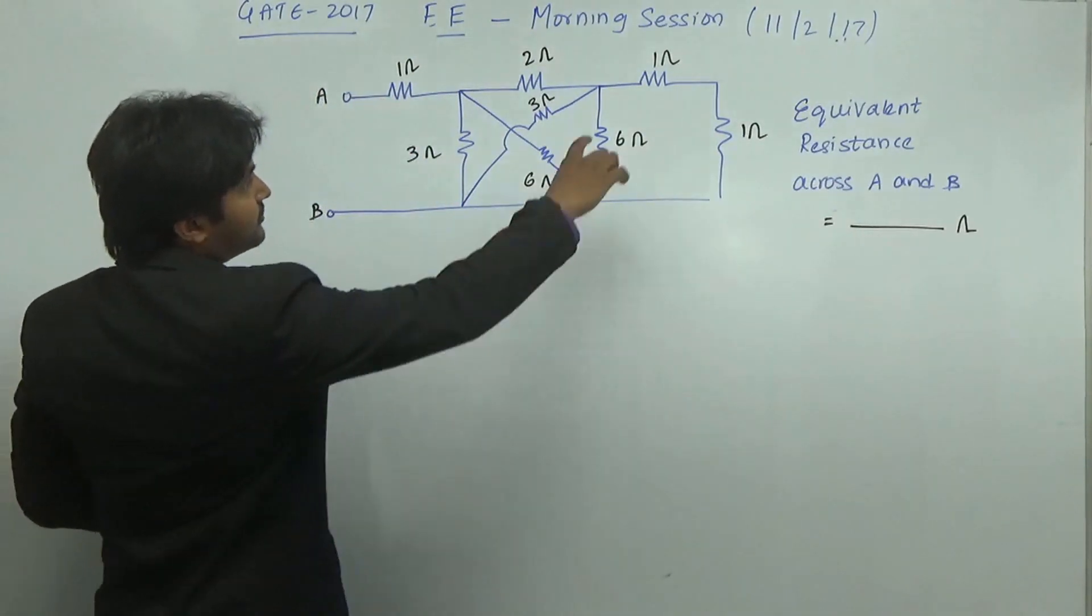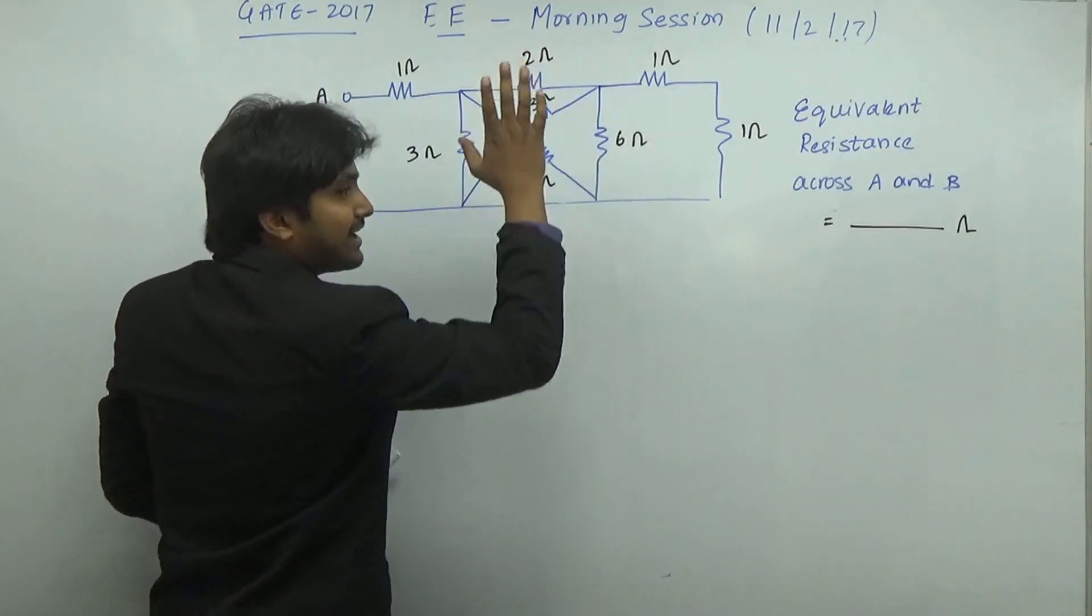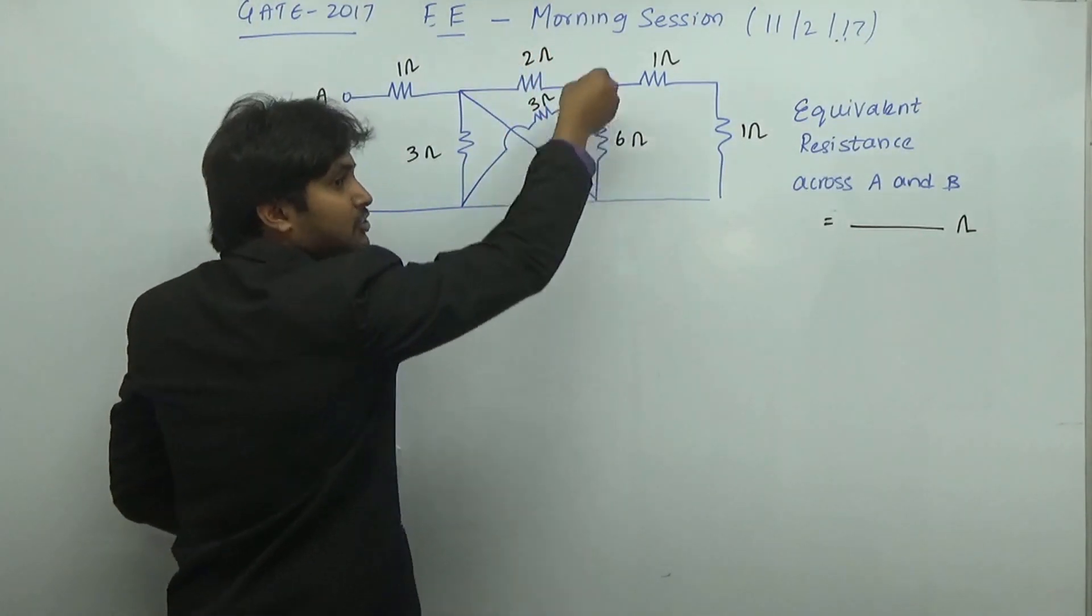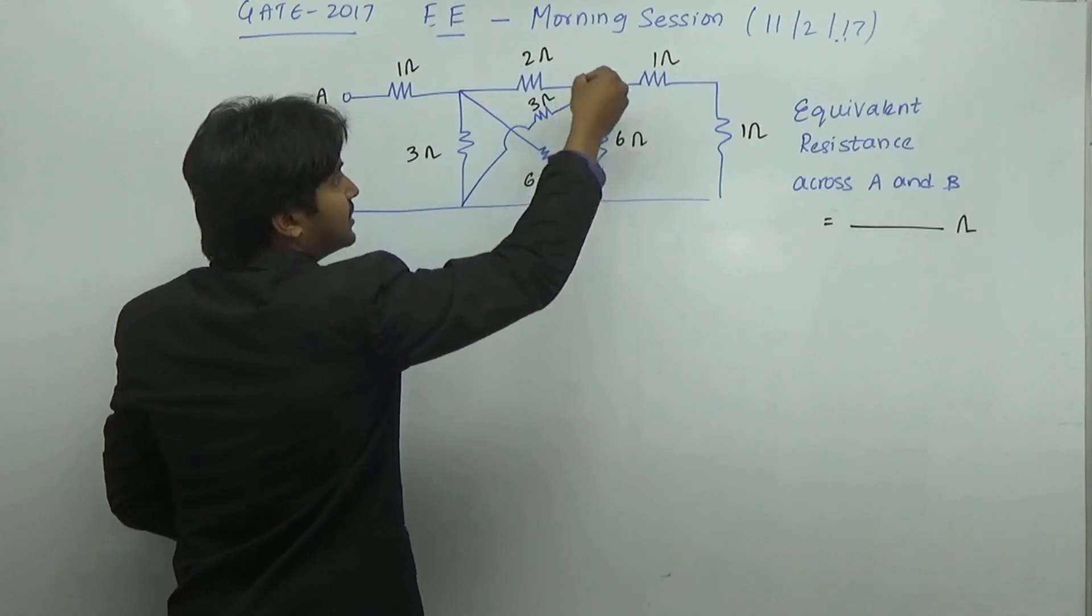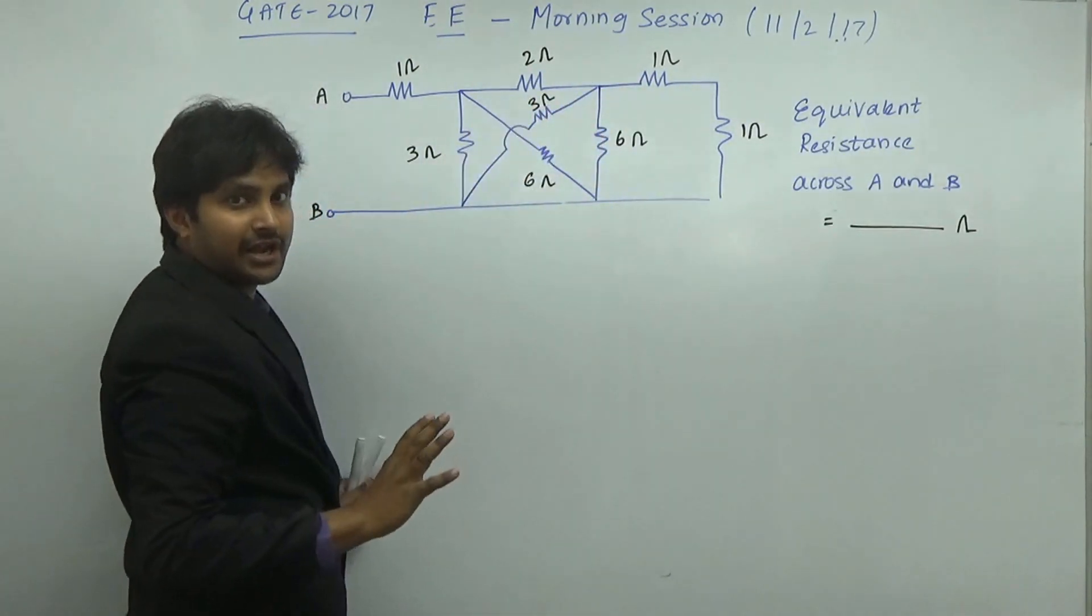Because if you observe, the 6 ohm resistance is in parallel with the 3 ohm resistance. We can write this because parallel is nothing but the node point has to be the same. Now if you observe here, for 6 ohms and 3 ohms, both the node points are same. So they are in parallel.